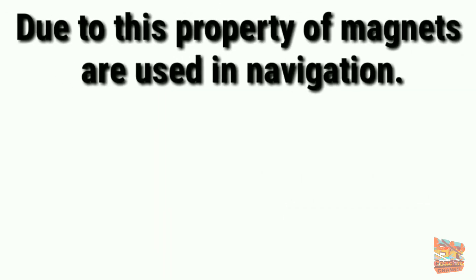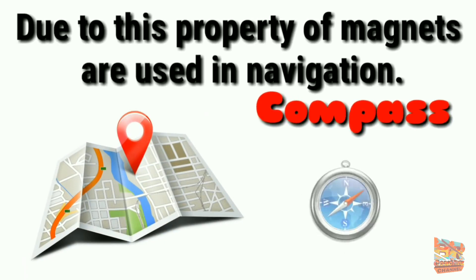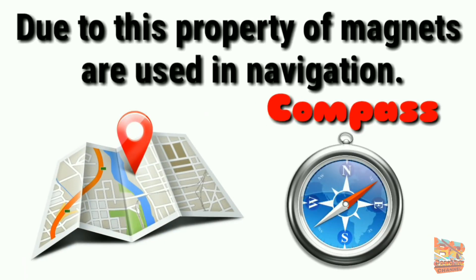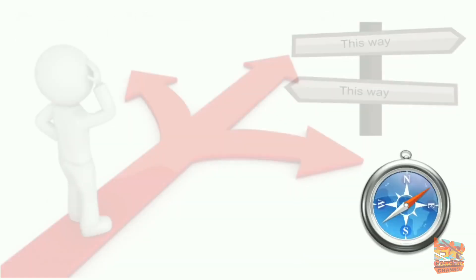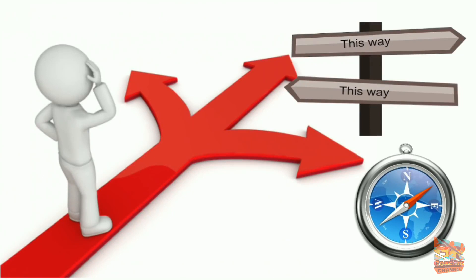Due to this property, magnets are used in navigation. A compass is a great tool for navigation. Compasses help countless travelers find their way using a magnetic field.